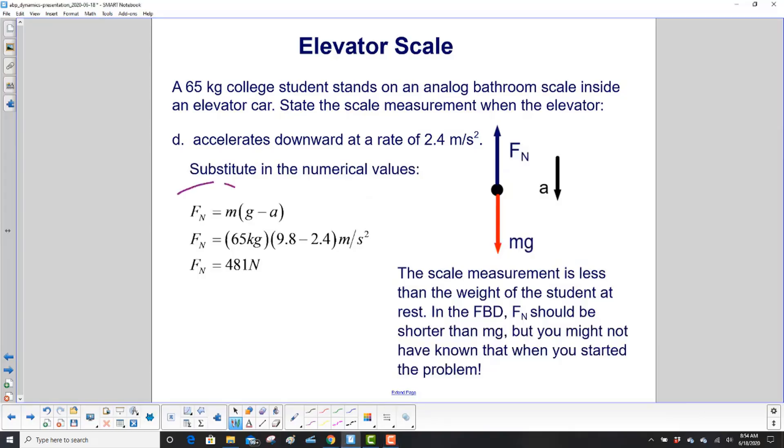We substitute in our numerical values here. And this time we get 481 newtons. So the scale measurement or the normal force, normal force and scale measurement is the same. It's now less than the weight of the student at rest. We didn't know that going into the free body diagram. So we're okay the way we drew it. And the math then gives us the actual magnitude of the forces.